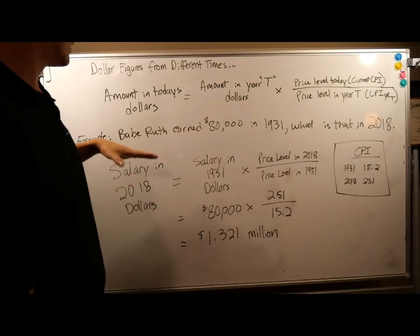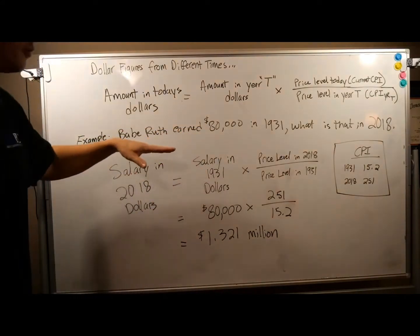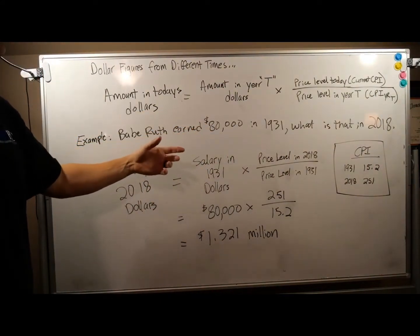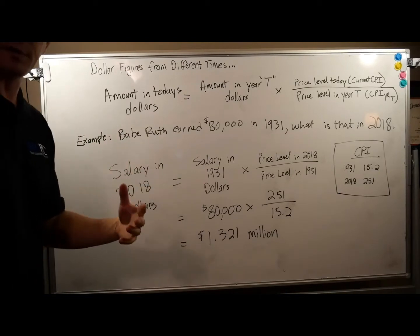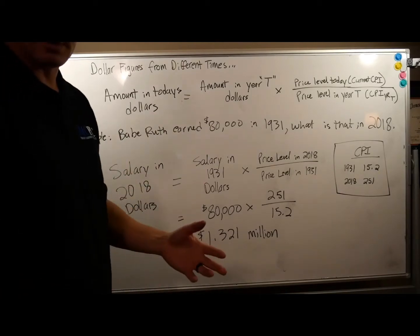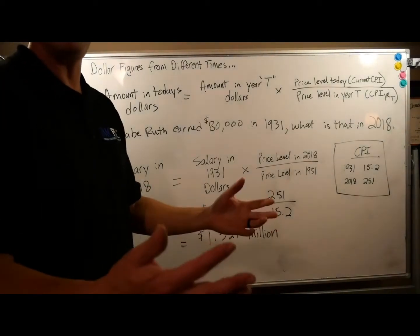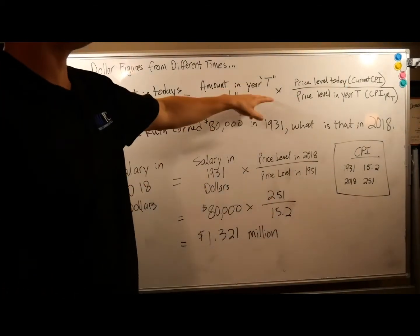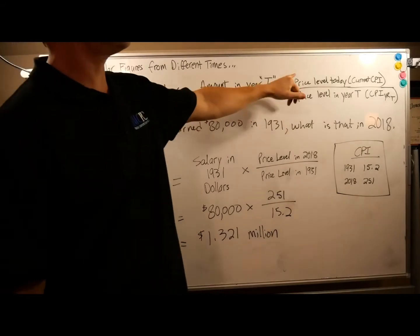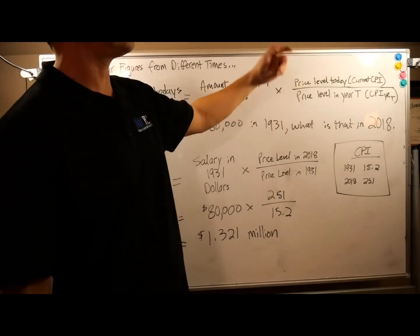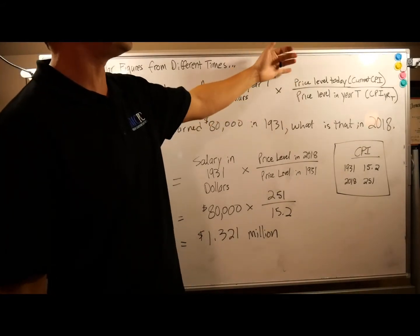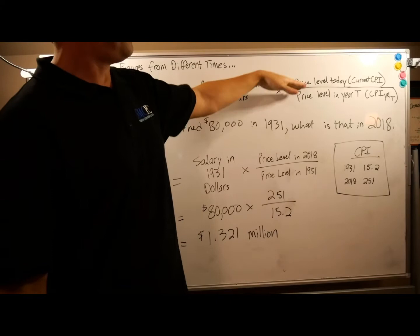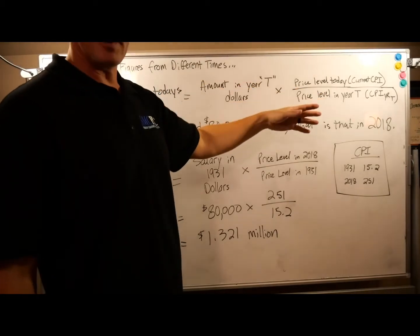In this example, we're going to use Babe Ruth, who earned $80,000 in 1931. 1931 is going to be year T, our 'what if' year. And we're going to multiply it by the price level today — that's the current CPI — divided by the price level in year T.